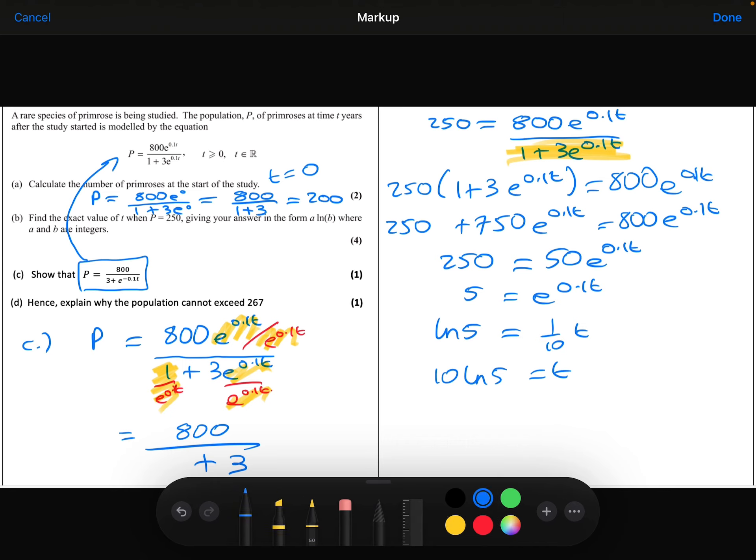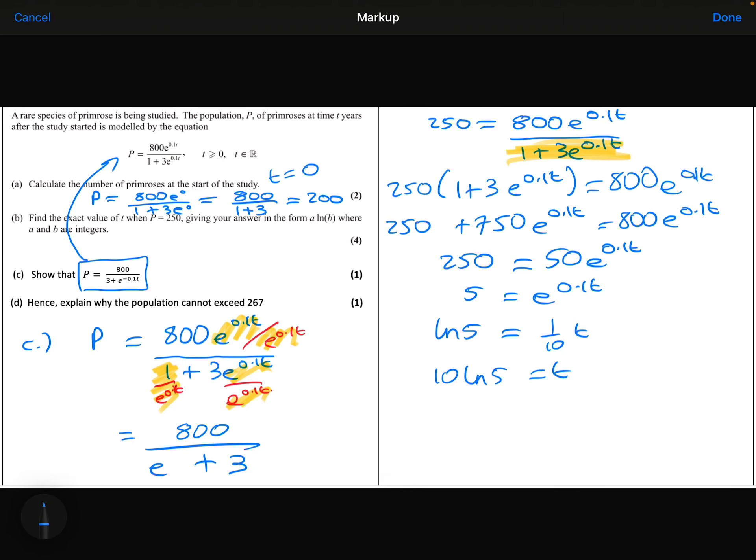The only other thing I need to think about is the 1 divided by the e to the 0.1t. Well, 1 over e to the 0.1t, I could just write that as e to the minus 0.1t. And there we go. This is the same thing as this. So my clue here was to look at the numerator, notice that we have divided by e to the 0.1t and then do the same with the rest of the fraction.